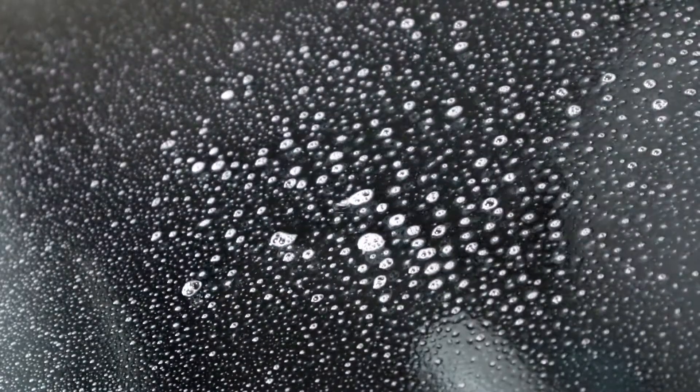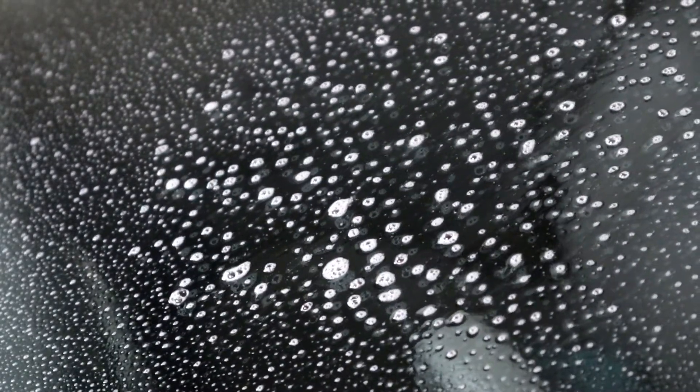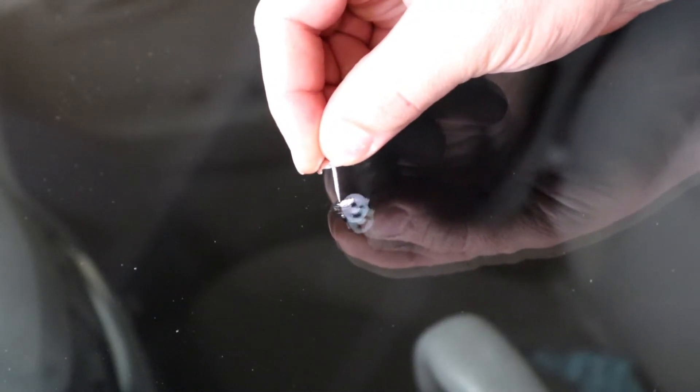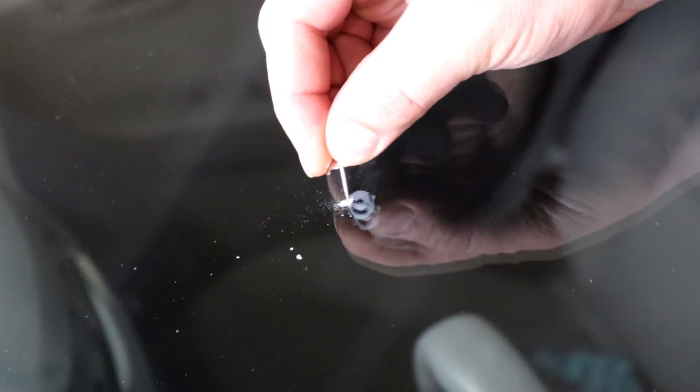So the first thing we're going to do is clean the window. So what I do is I have Perfect Glass. You can use Windex, whatever you got, glass cleaner. Clean the area so you get all the grease, dirt, and salt, whatever is on your windshield off. Then also use the pin that comes in this kit or something small that you have to clean out all the glass shards you can get out of the chip itself.